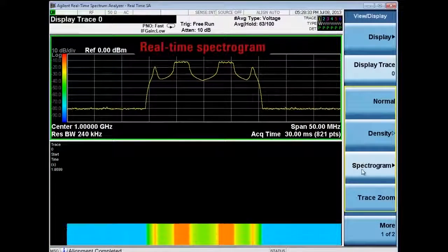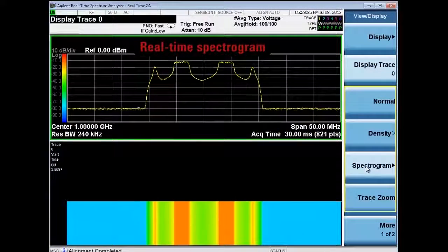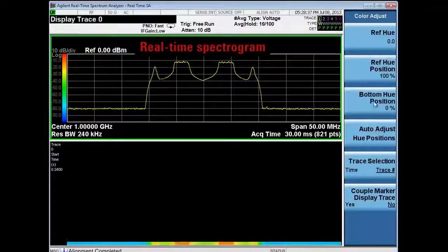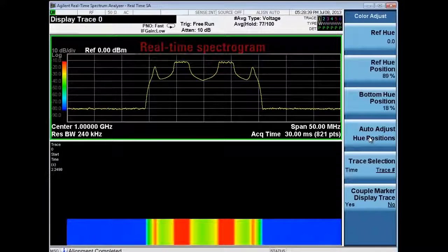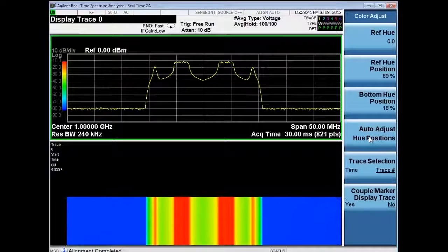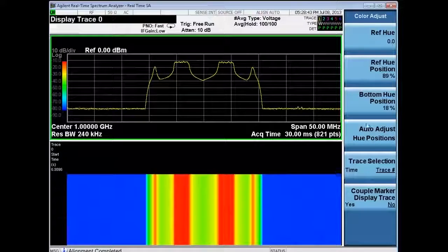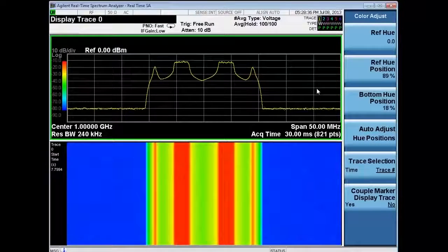In the MXA's real-time mode, we are processing the gap-free time domain samples very fast, almost 300,000 FFTs per second. This allows us to see the entire bandwidth without gaps, so we see all the transient activity and don't miss elements of the signal.